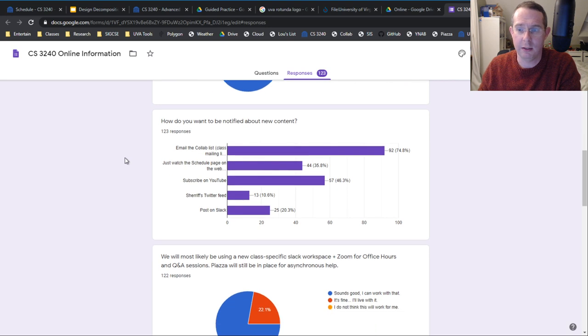How do you want to know about new content? You want an email. Okay, great. Of the 123, 92 of you said you want to just email the collab list. So, if you're one of the people who doesn't want that, set up a filter, I guess. I am going to keep the schedule page updated with all the links. I'm also going to be creating threads on Piazza for every online video. So, you can go in and post questions there, and I'll come back and answer those. Maybe I'll record my answers. But, that's a great place to post those questions. And I am going to hold a live Q&A sometime this coming week.